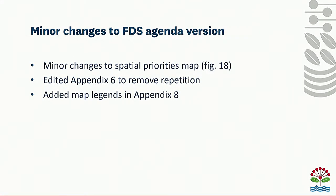I want to point out some really minor changes. We sent you a document on Thursday or Friday, and there are three really minor changes from that version to the one in the agenda. Some minor changes to the spatial priorities map, figure 18 — we fixed some of the hatching. We edited Appendix 6, where we removed some repetition that still appears in Appendix 8. And we added legends to the maps in Appendix 8 — they didn't have legends and they now do. Nothing changed in the text, so the two versions are exactly the same.